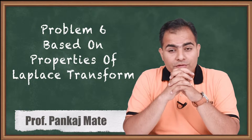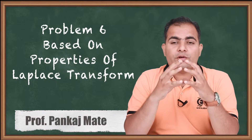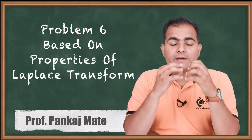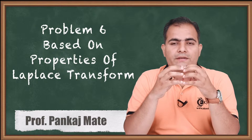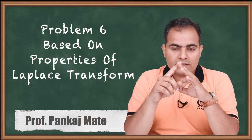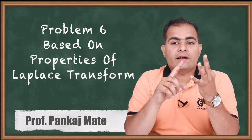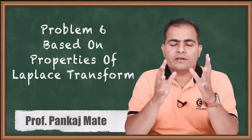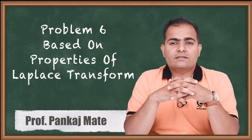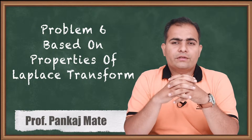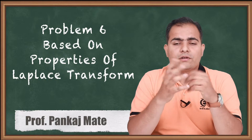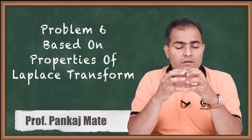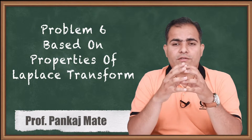Before entering the last question, the most important properties are frequency shifting, time shifting, and time differentiation. In many of the questions, you have seen these 3 basic properties. I will repeat: frequency shifting, time shifting, time differentiation, and frequency differentiation property — all 4 are important. The remaining ones are theorems: initial value theorem, final value theorem, and convolution theorem. We will solve all the theorems separately, and also solve basic problems on initial value, final value, and convolution separately.